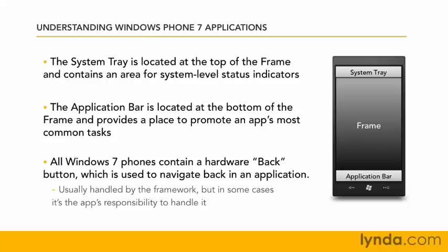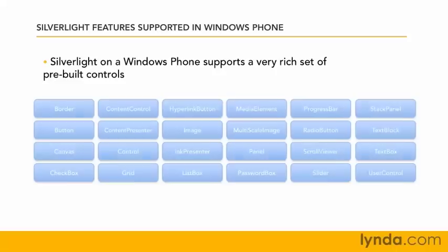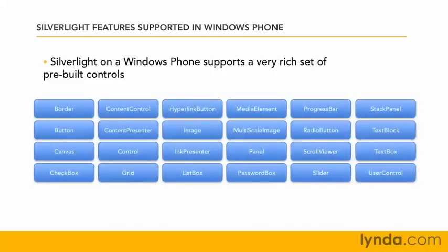Now that we've seen how Windows Phone applications are organized, we can look at what kinds of features we can put in them. Silverlight on Windows Phone provides a pretty rich set of things for your applications. Here is a list of all the existing Silverlight controls you may be familiar with that are supported in Windows Phone — every one of these in a blue box can be used on the phone.